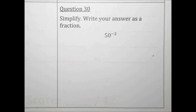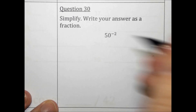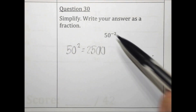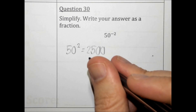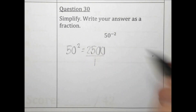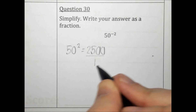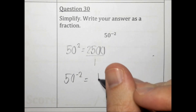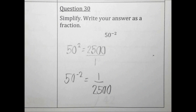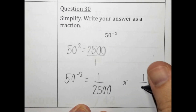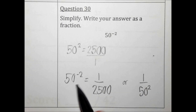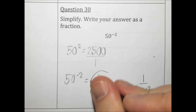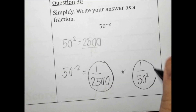Simplify and write your answer as a fraction. Let's do this problem without the negative exponent first. 50 squared is 2,500. The negative exponent takes the answer we just got — which is 2,500 over 1 — and flips it upside down. That's called the reciprocal. So 50 to the negative second is 1 over 2,500. You could also have written 1 over 50 squared, which gives the same result: 1 over 2,500. Either form would be acceptable.